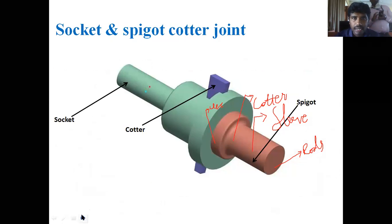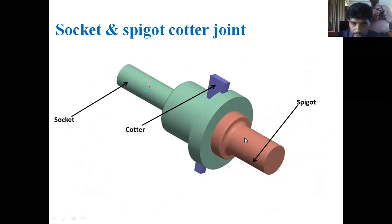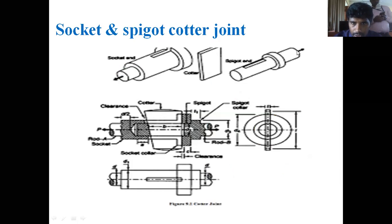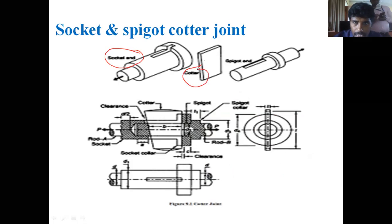The second type is the socket and spigot cotter joint. Here there are three elements: the socket is one element, the cotter is the second, and the spigot is the third. As you can see in the assembly drawing, these two parts — the socket and the spigot — are joined with the help of a cotter provided in the slots.